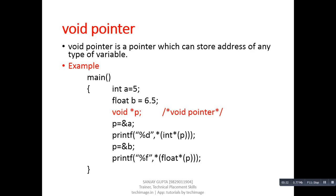We can understand the working of void pointers with this example. In this example, we have a variable a with value 5, and it is of integer type. Another variable b has value 6.5 and is of float type.